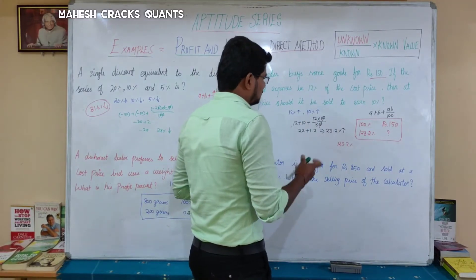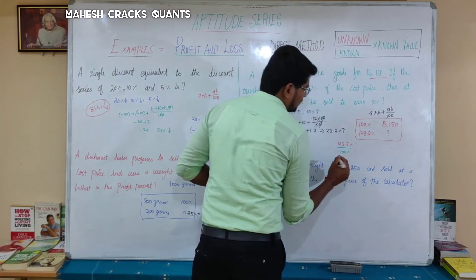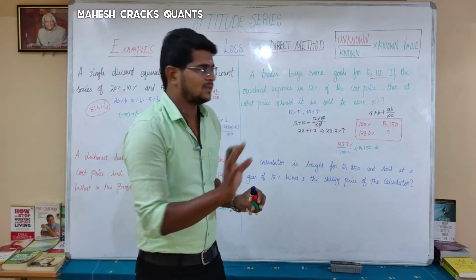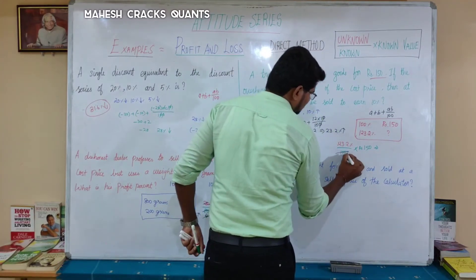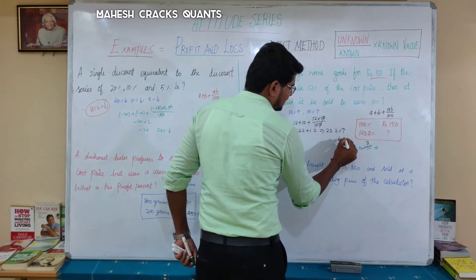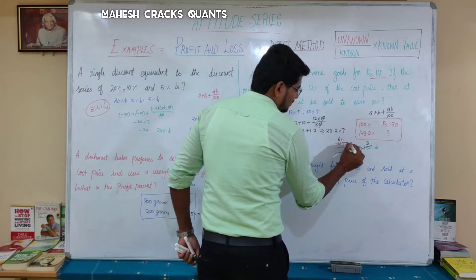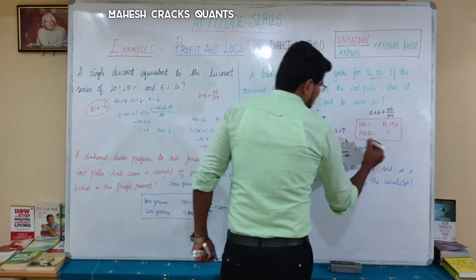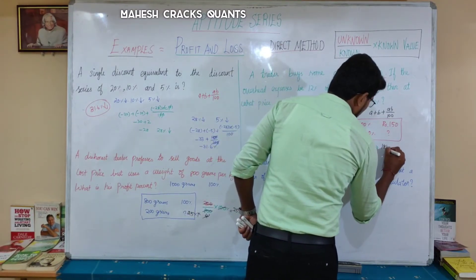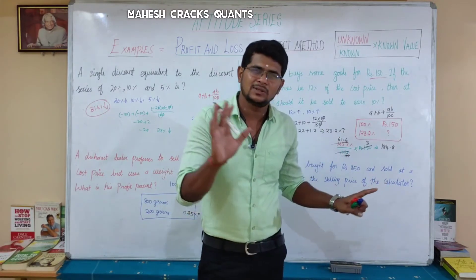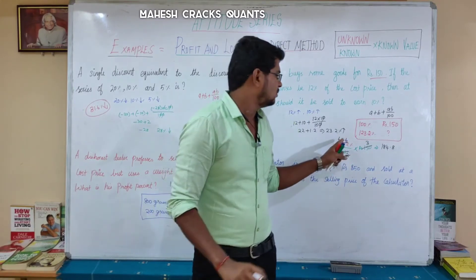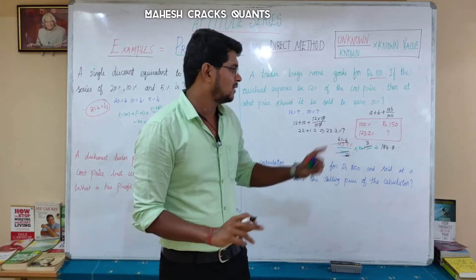So 123.2 divided by 100 multiplied by 150. Simplifying: 61.6 multiplied by 3 equals 180 plus 3 plus 1.8, giving 184.8. Therefore, the selling price is Rs.184.8.